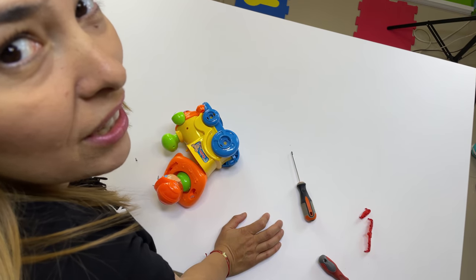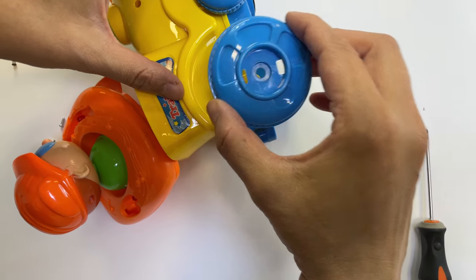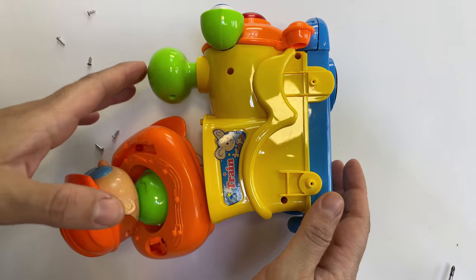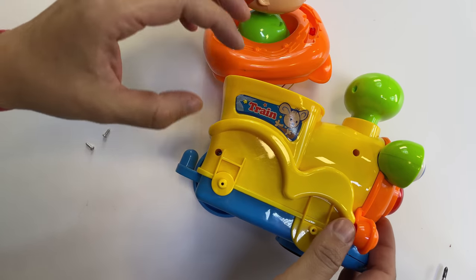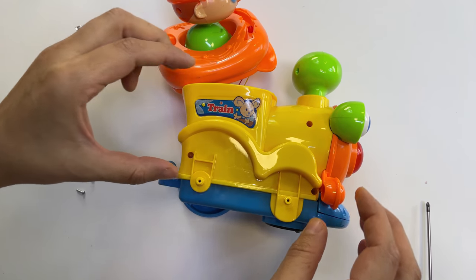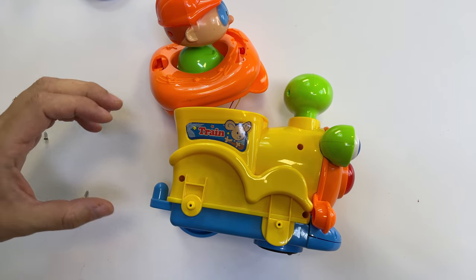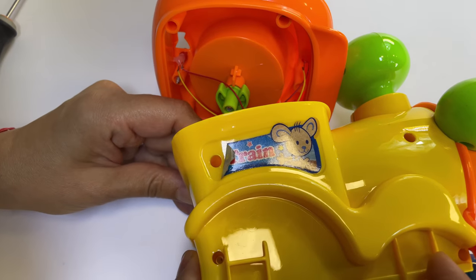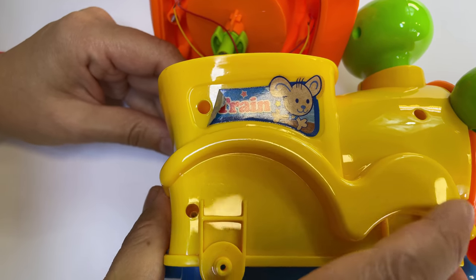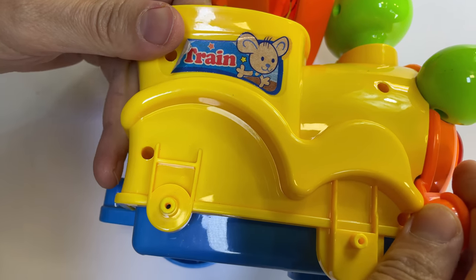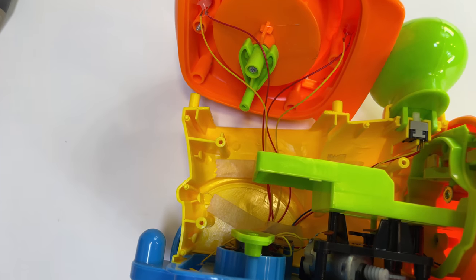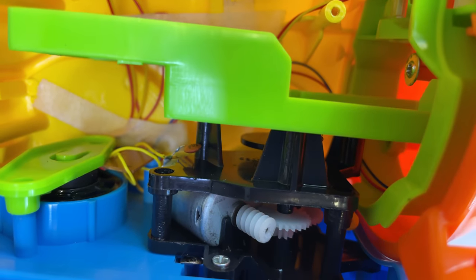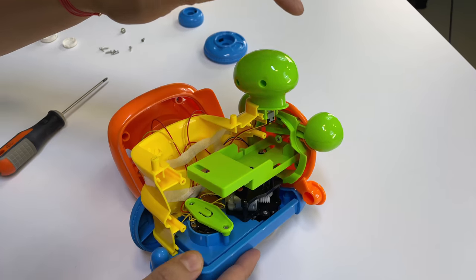This was a real challenge but we managed to remove the caps for the wheels and now we remove the wheels. Basically this part should come out - oh we have another screw. And gently try to get this part out and voila! Now we have an inside to this train engine. Let's start with the eyes.